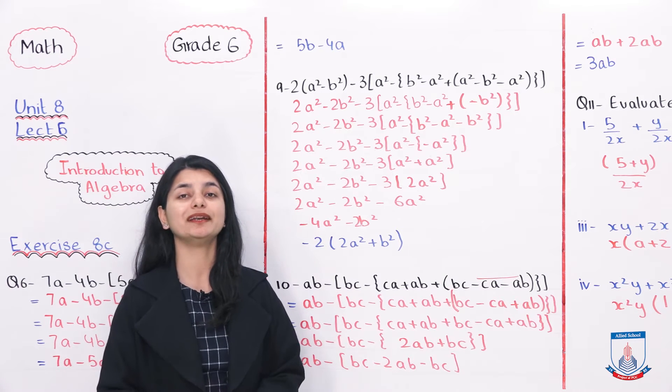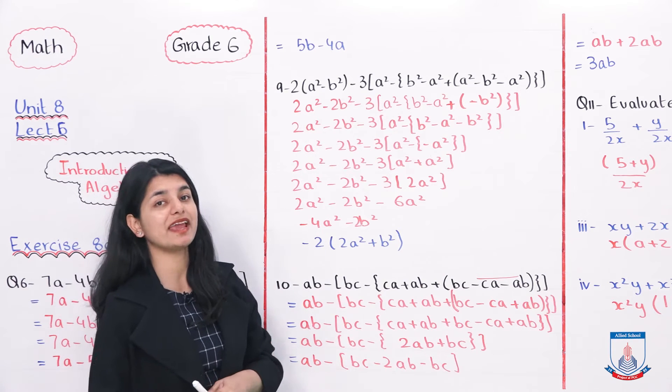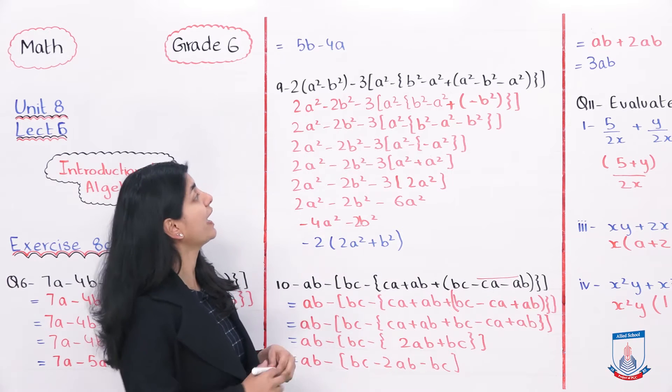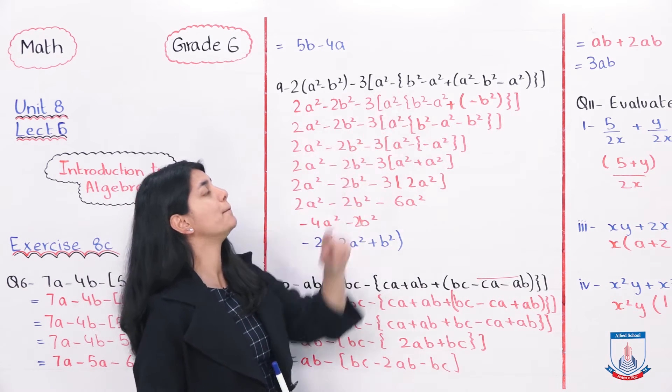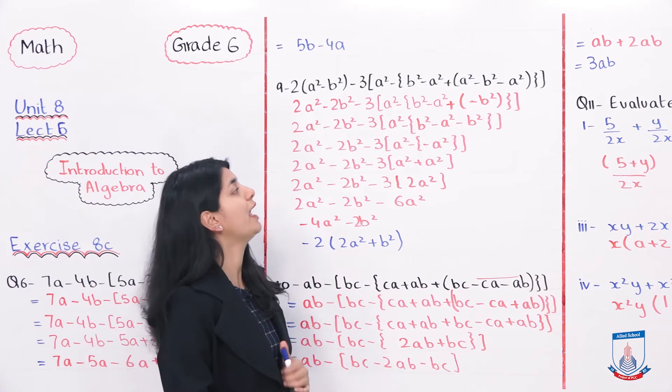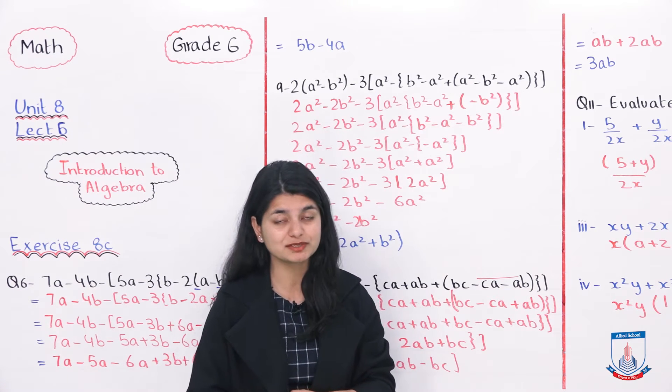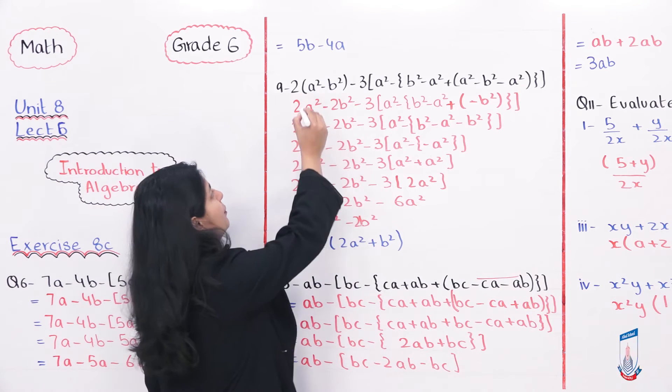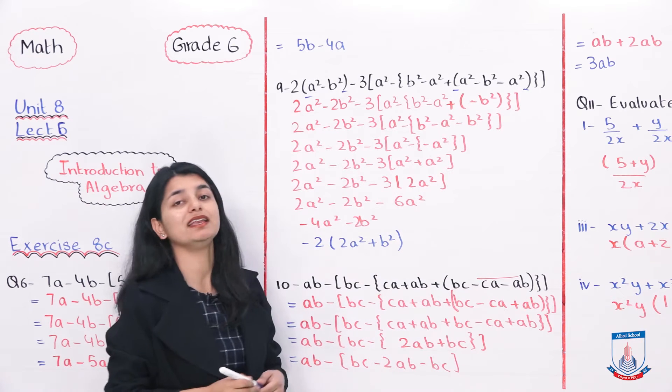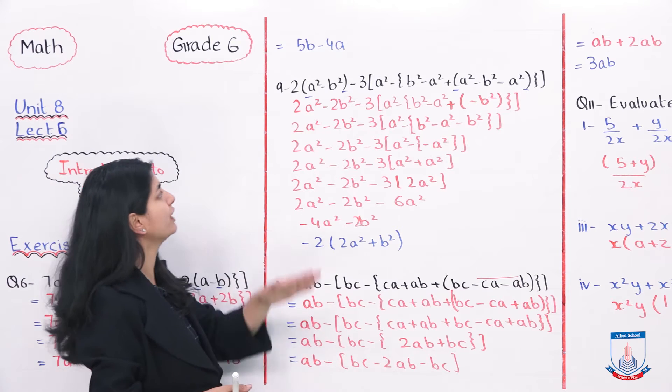Ab hum dekhte hain question number 9 ko. Question number 9 hai, you have 2, you have parenthesis A square minus B square. Then you have minus 3, you have the bracket A square minus your braces B square minus A square plus parenthesis again. A square minus B square minus A square and all the brackets are closed. Sab se pehle humein dekhna hai ab yahan per apne parenthesis ko. Wo do jagah per hai, their there and their there. Uska tariqe kaari ye hota hai ke pehle toh aap parenthesis ke andar wali cheez ko bhi solve karte ho.